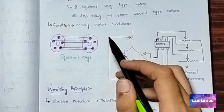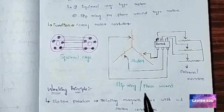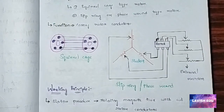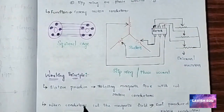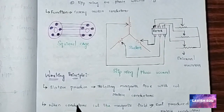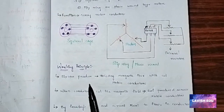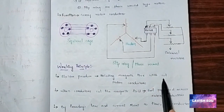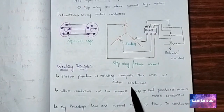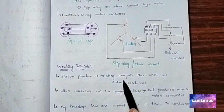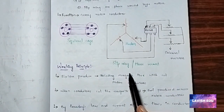And this is the slip ring or phase wound rotor. Now next we will see the working principle of the three-phase induction motor: the stator produces a rotating magnetic flux which cuts the stator rotor conductors.